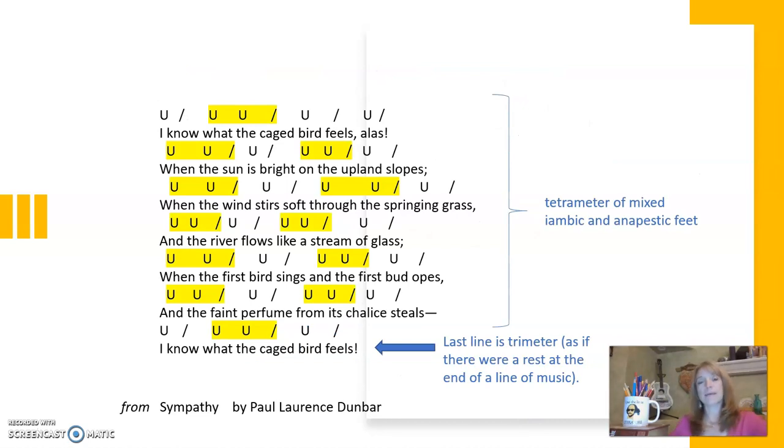Here is a stanza from another very famous poem, another one of my favorites, called Sympathy by Paul Lawrence Dunbar. And this is an example of tetrameter in mixed meter. The two feet are iambic and anapestic, and they are used in alternating ways. So the first and last lines of the stanza are iambic and then anapestic, and then the interior lines are the opposite. And it also creates a very musical feeling.